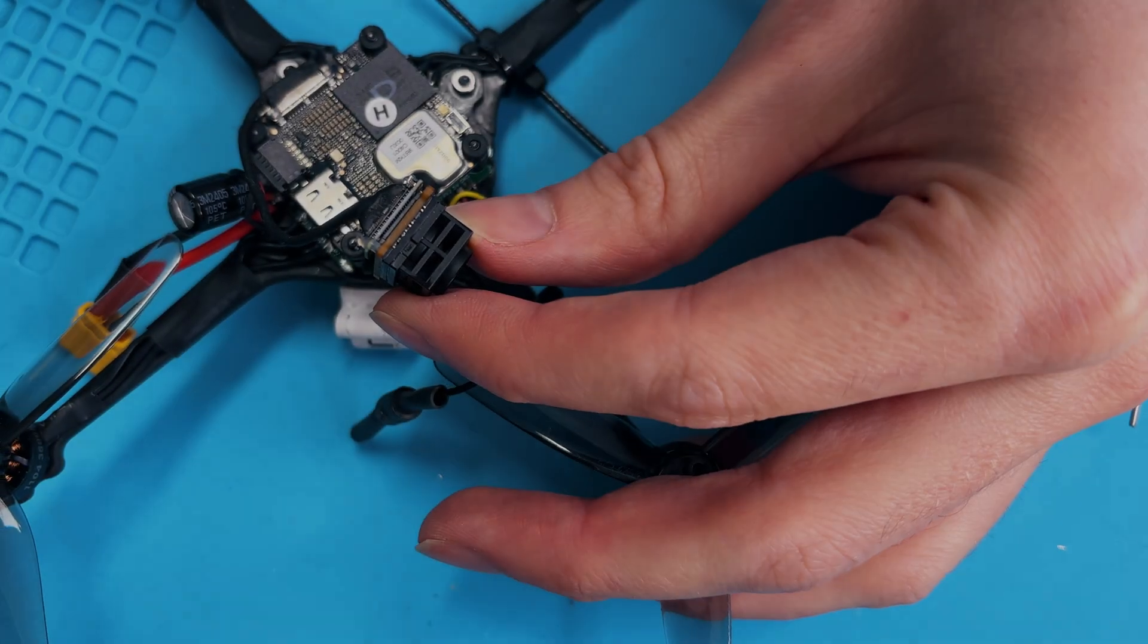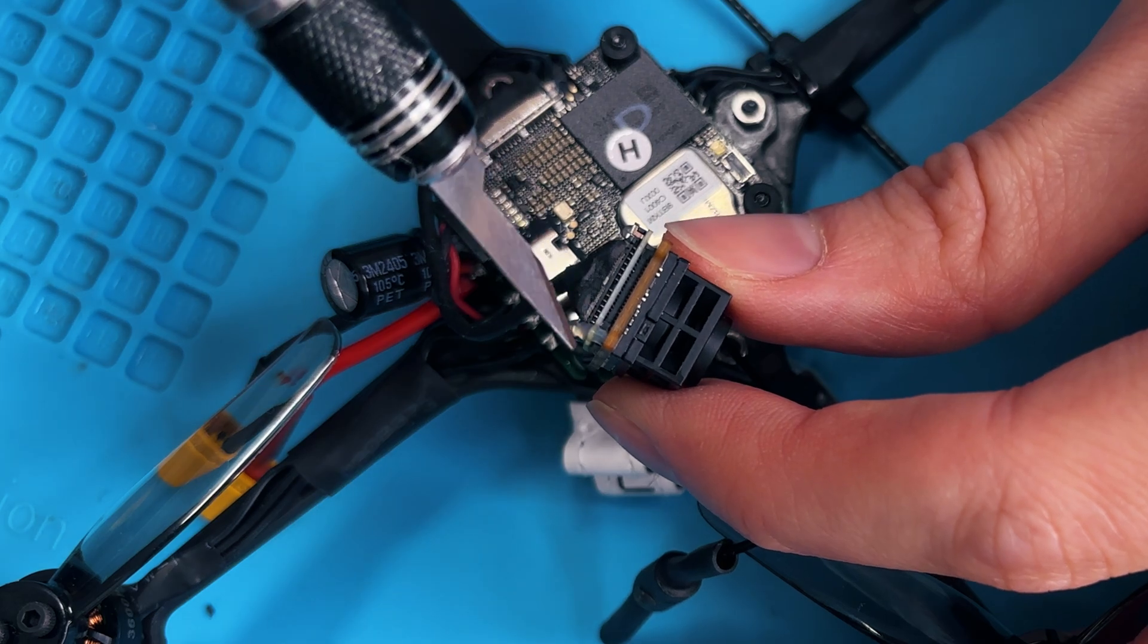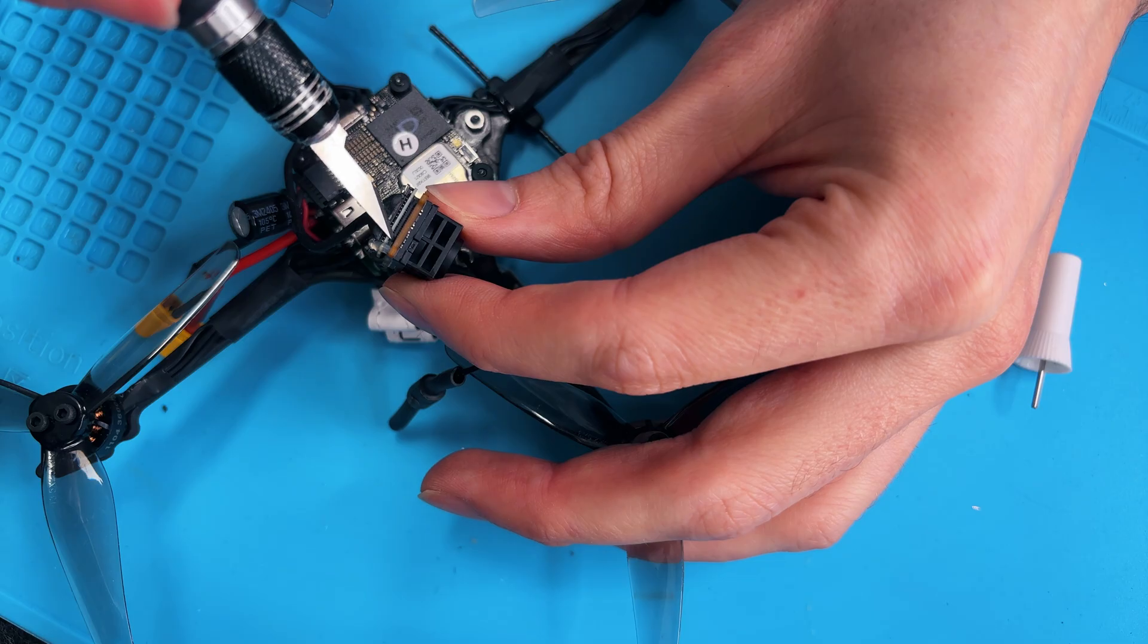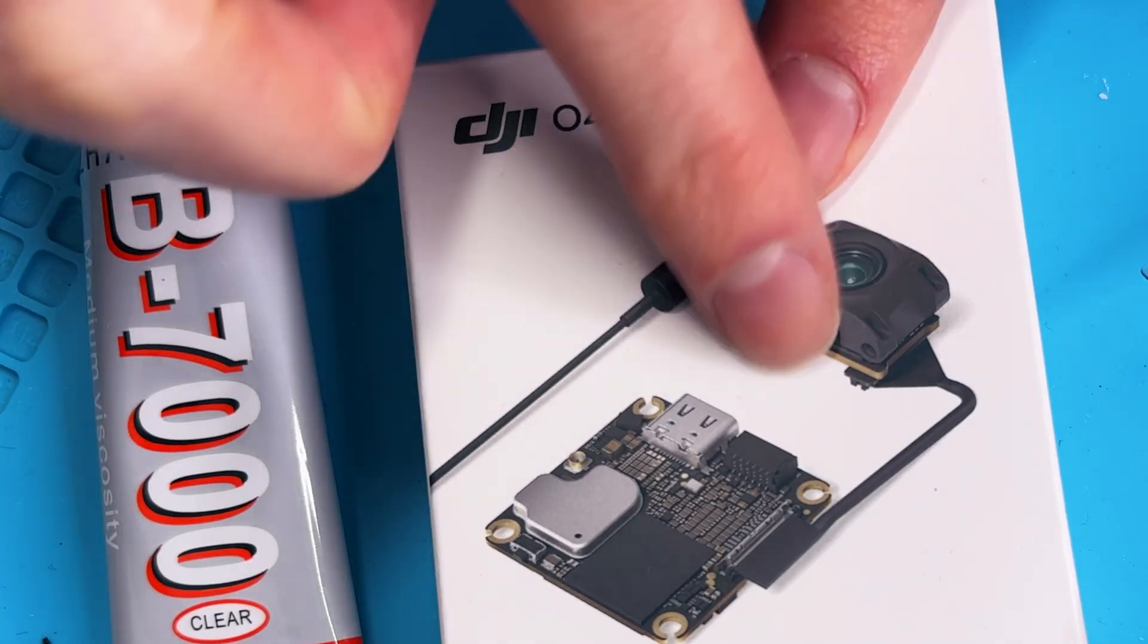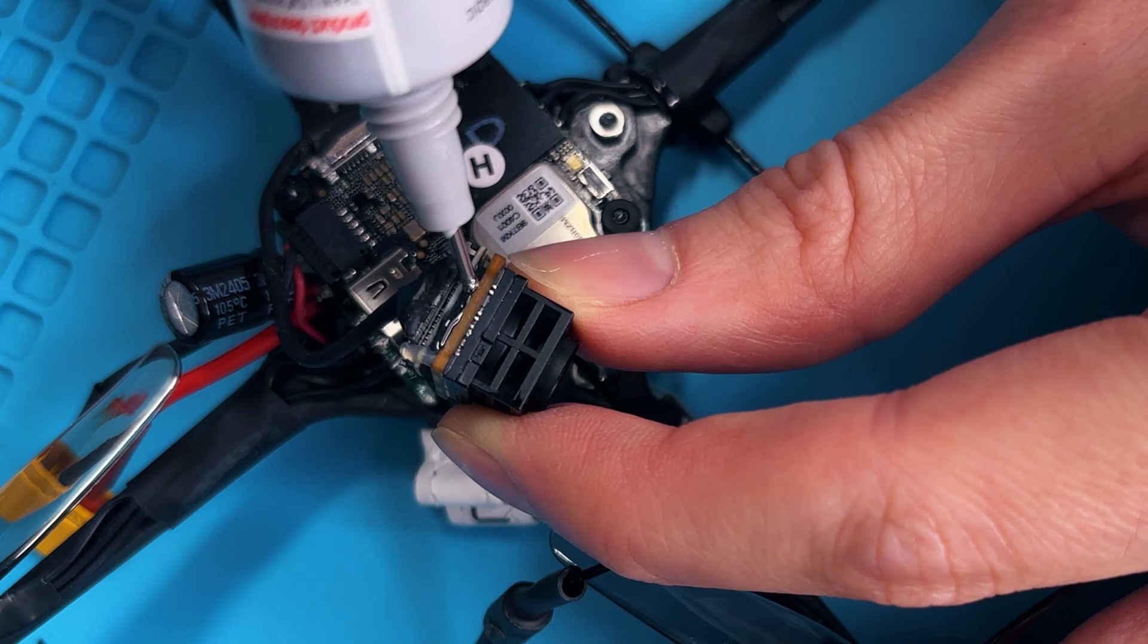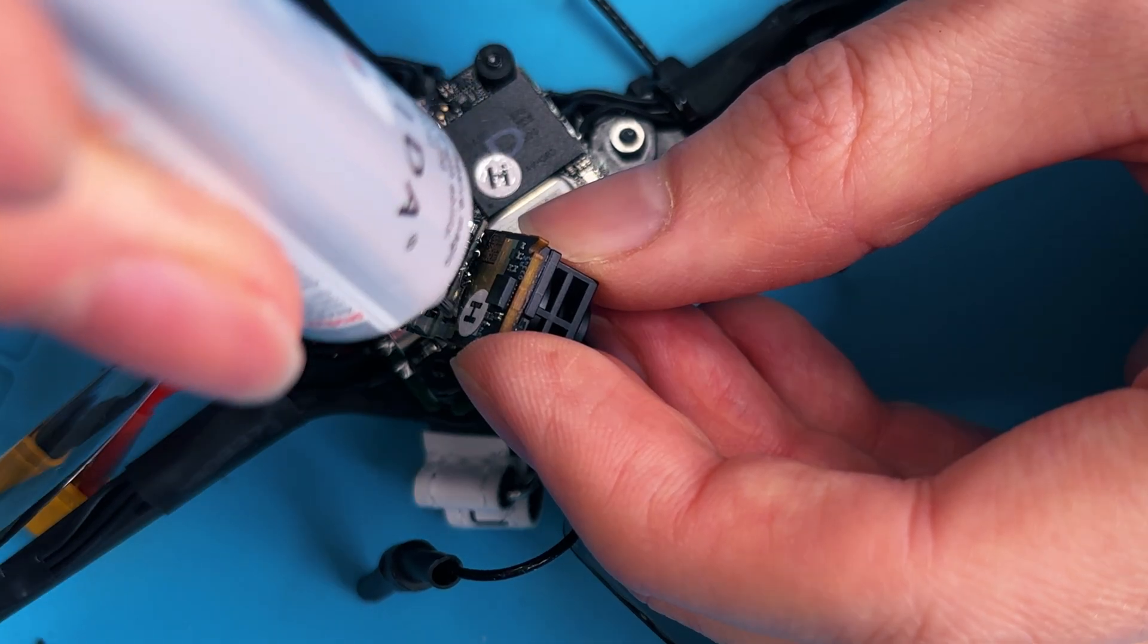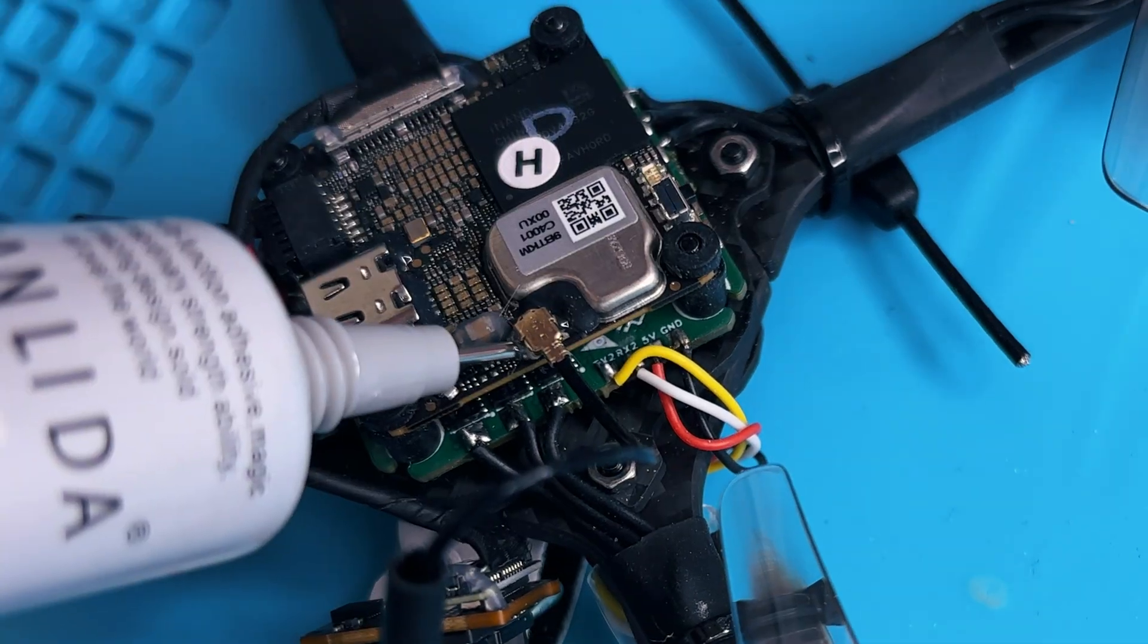Alright, time to reinforce the O4. Because let's be real, it's light, but it's also crazy fragile. One bad crash and boom! The UFL connector snaps off or the camera plug breaks. The leverage on that camera plug is way too high. So, let's lock it down with some solid reinforcement. We're pushing glue into every weak spot. Locking everything down so nothing comes loose in a crash. The UFL connector is getting extra support too. No weak links here.